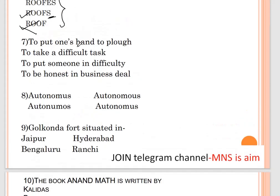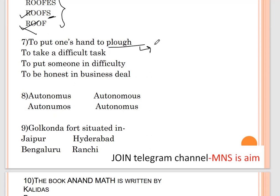Question number seven: idiom 'to put one's hand to the plow'. Options are: A — to take a difficult task, B — to put someone in difficulty, C — to be honest in a business deal. A plow is used in farming, so if someone puts their hand to the plow, it refers to taking on a difficult task. Correct answer is option A — to take a difficult task.